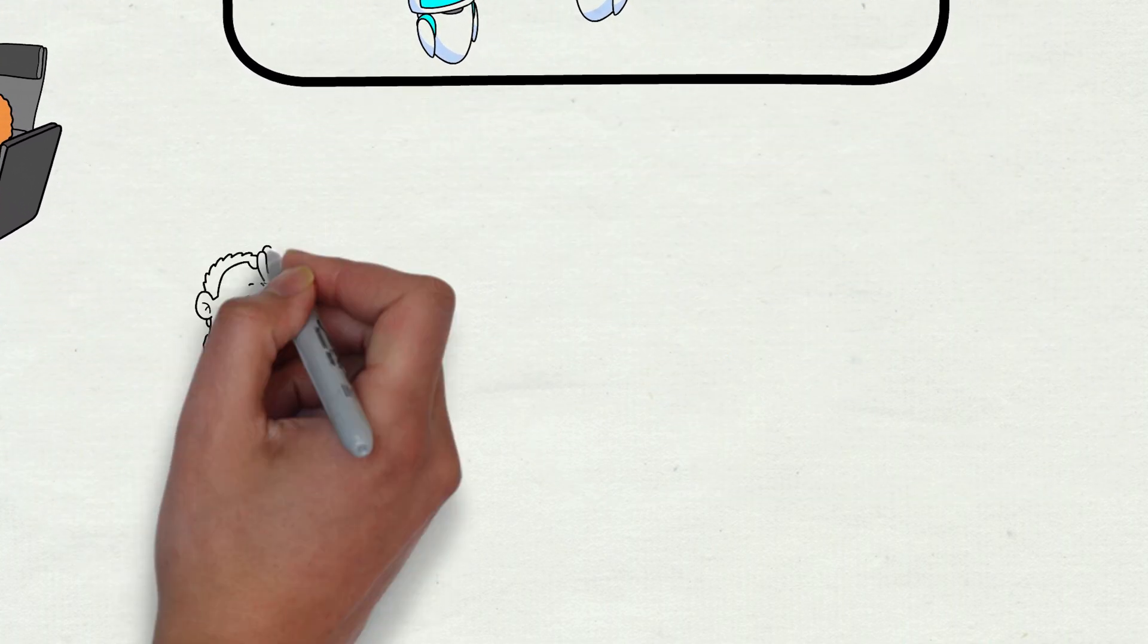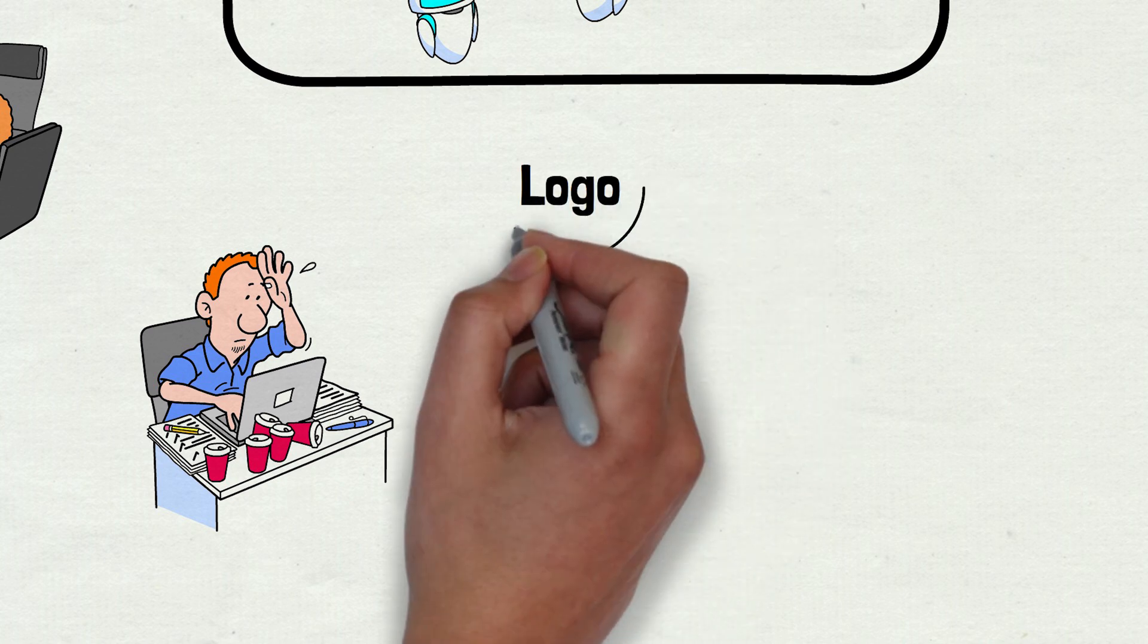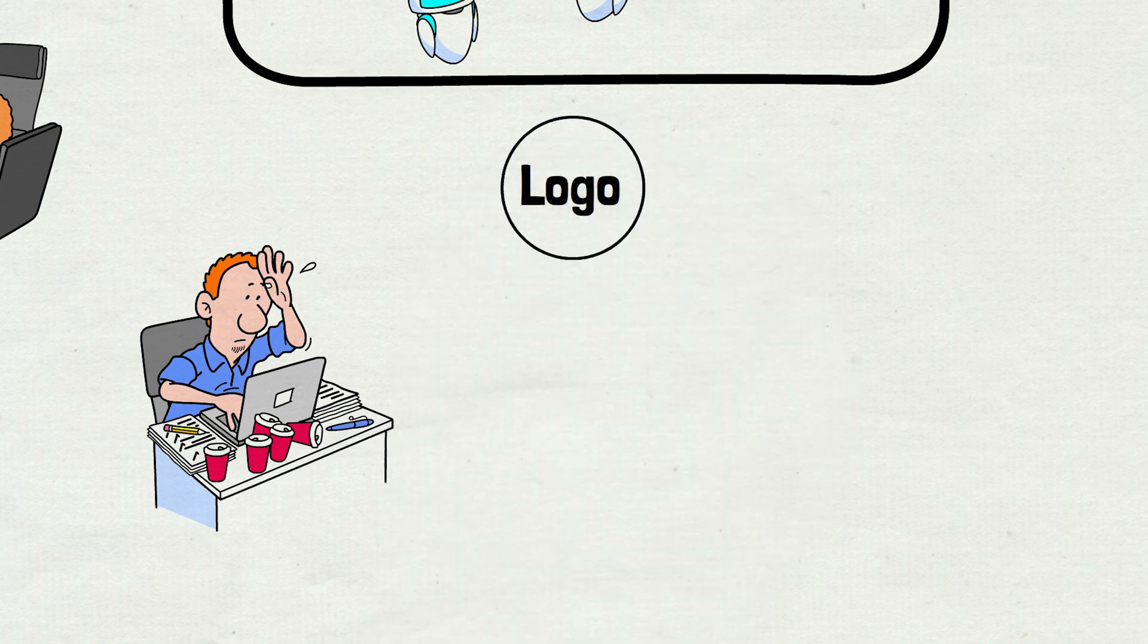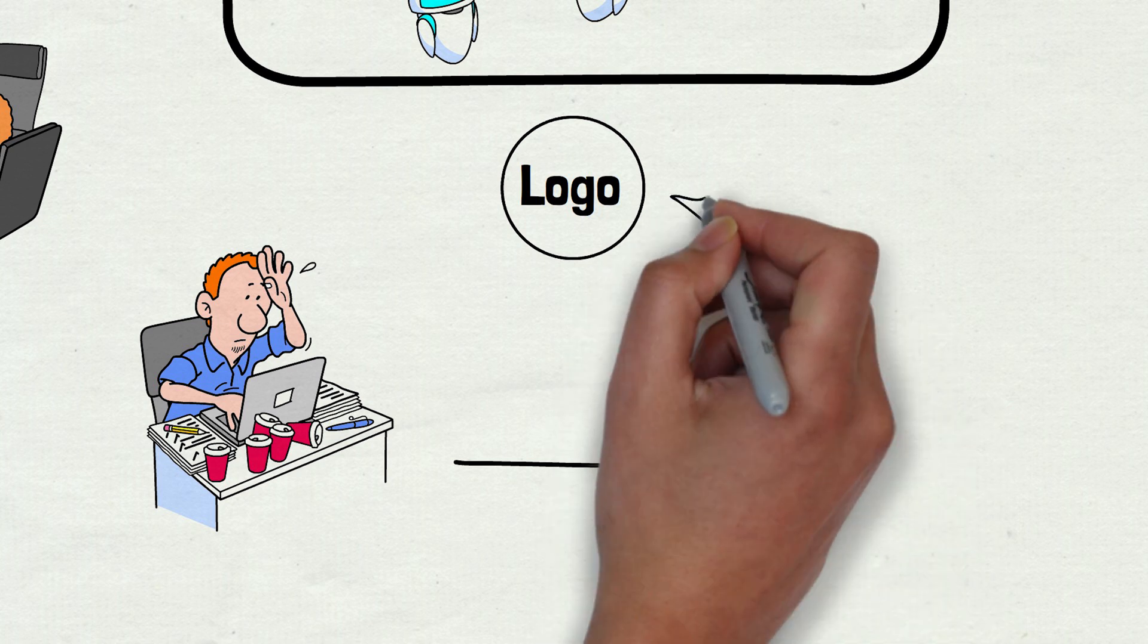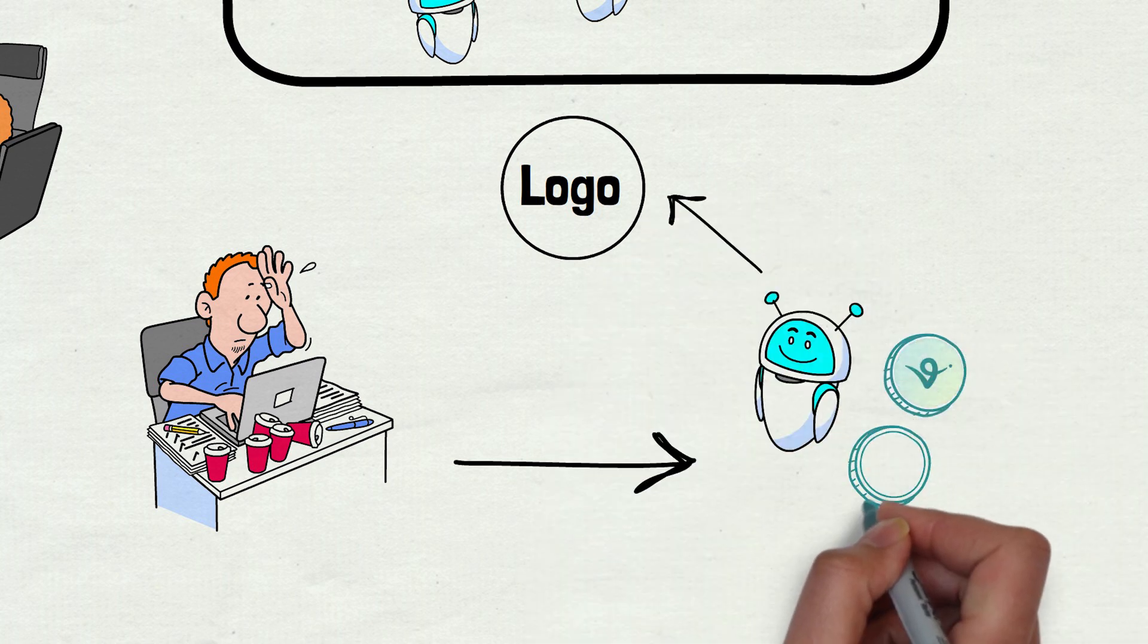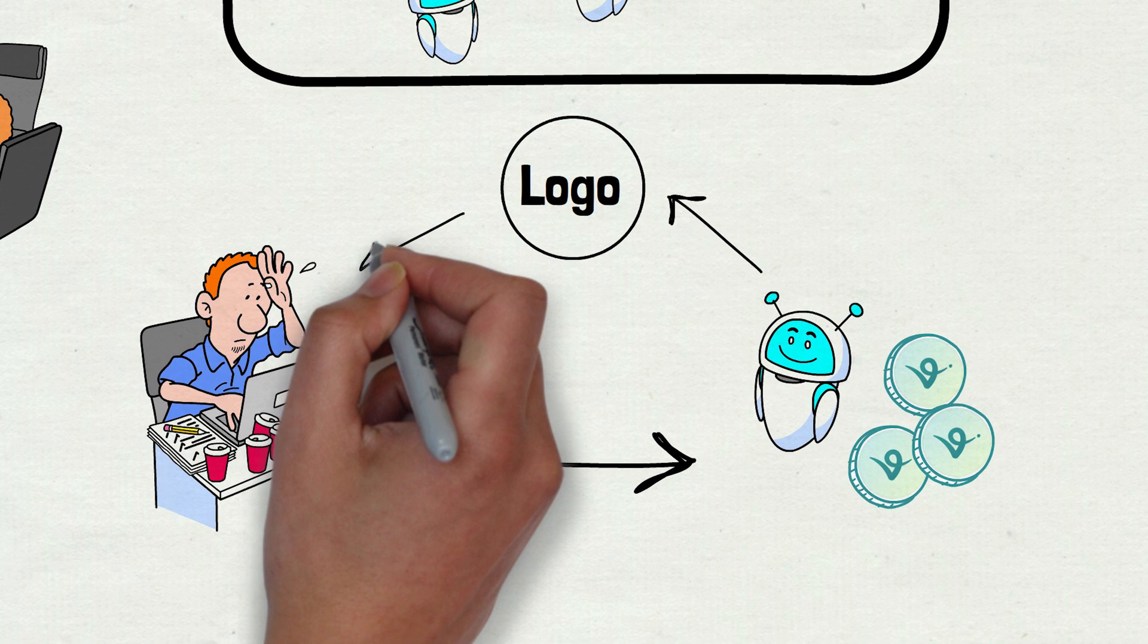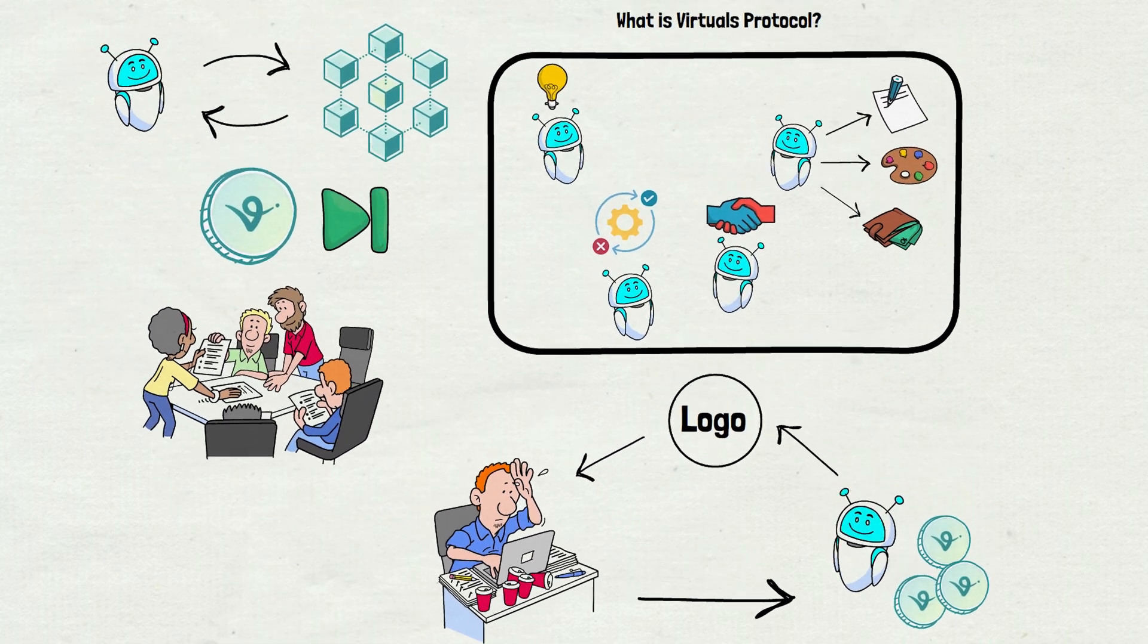Well, imagine you're running a small business and need a logo. Instead of hiring a designer, you could hire an AI agent, pay it in crypto, and get your logo fast. Think of it as a marketplace where AI replaces freelancers.